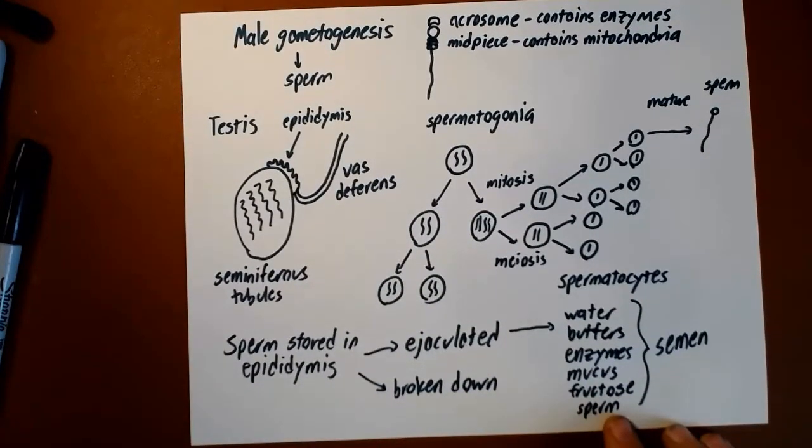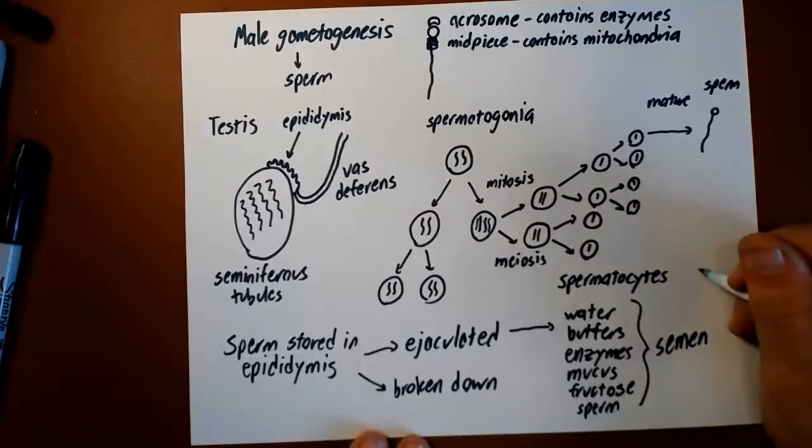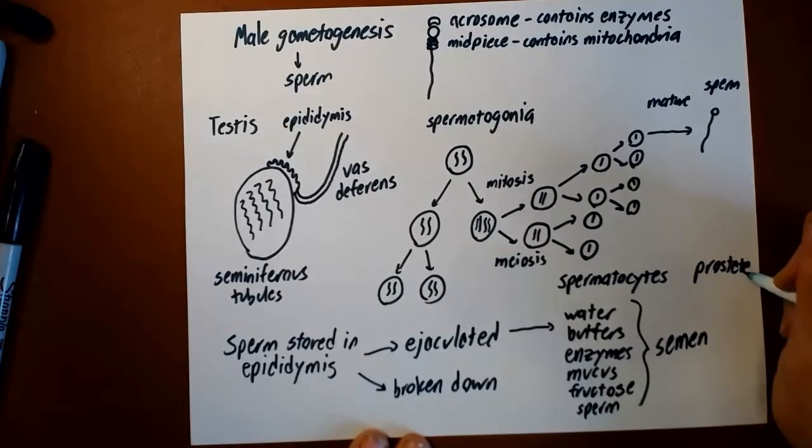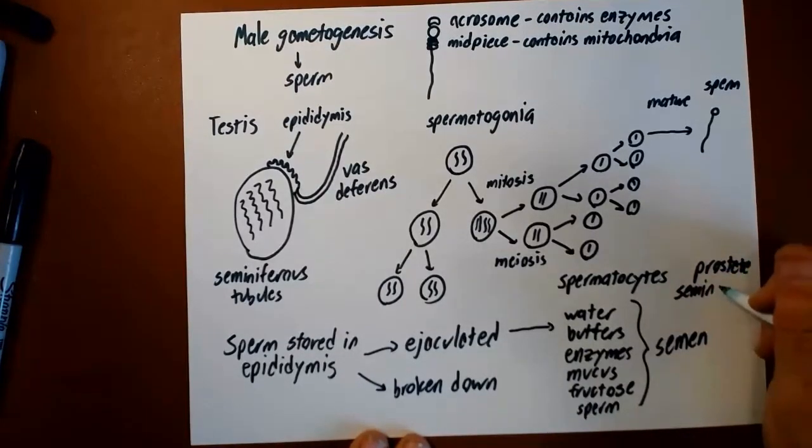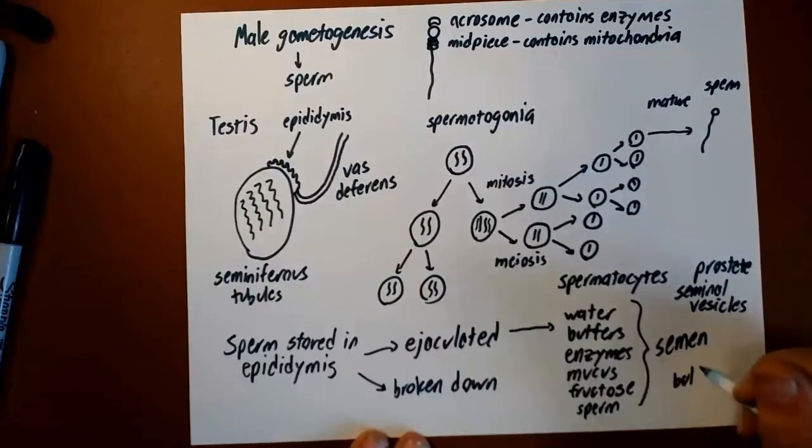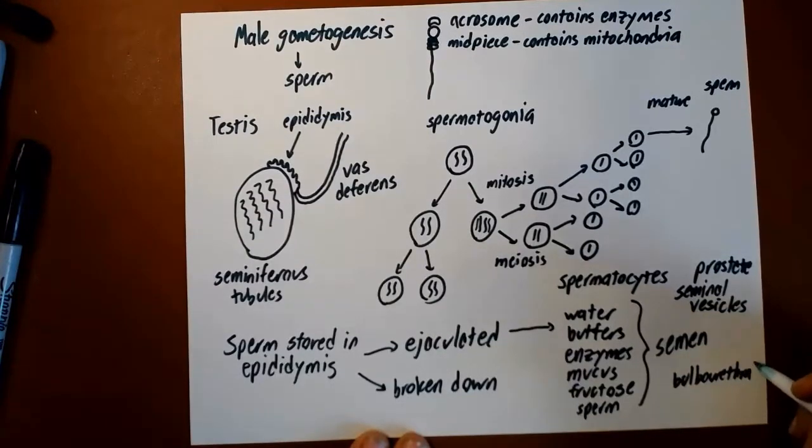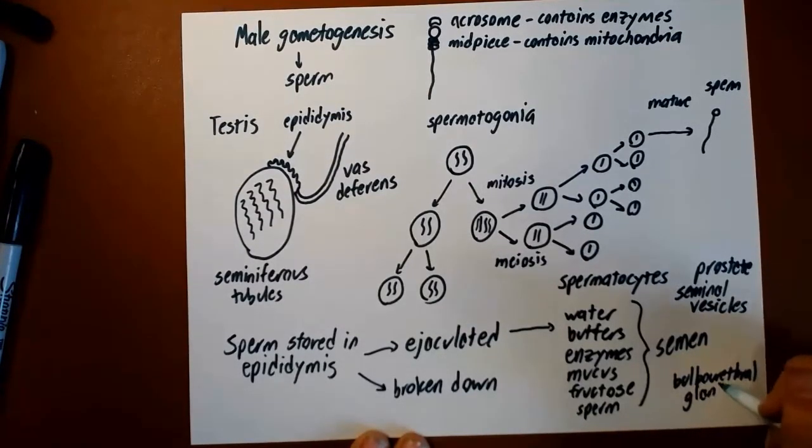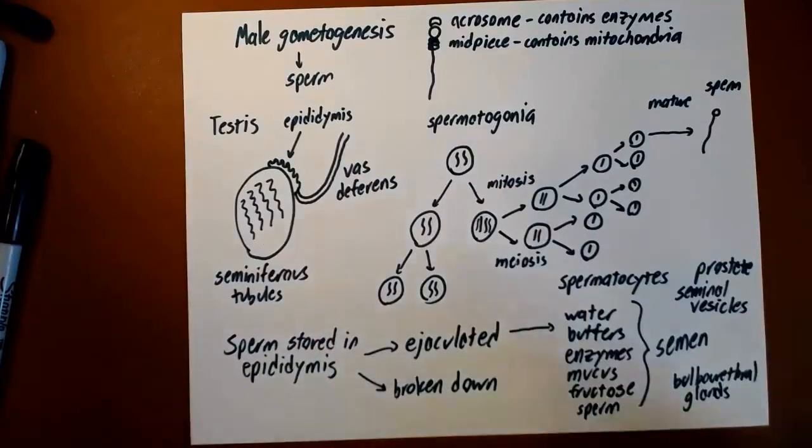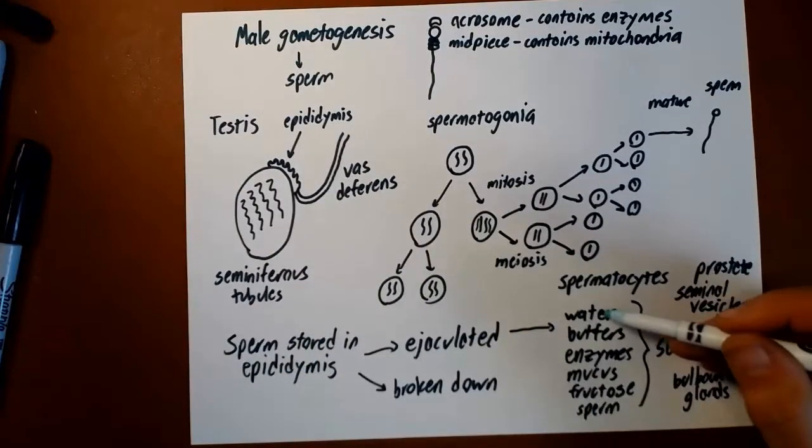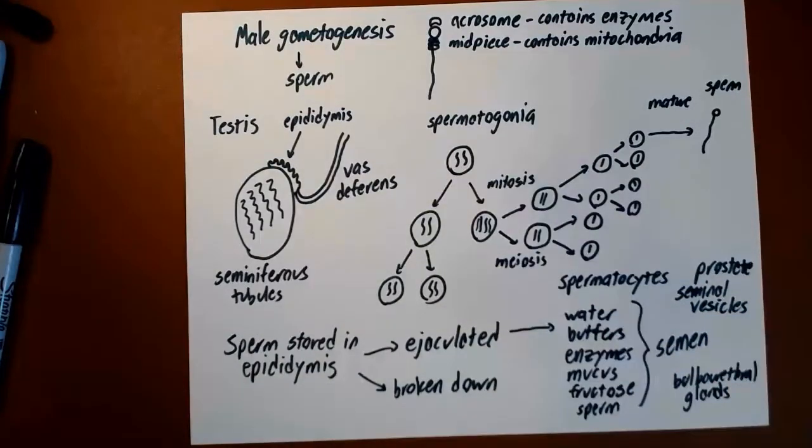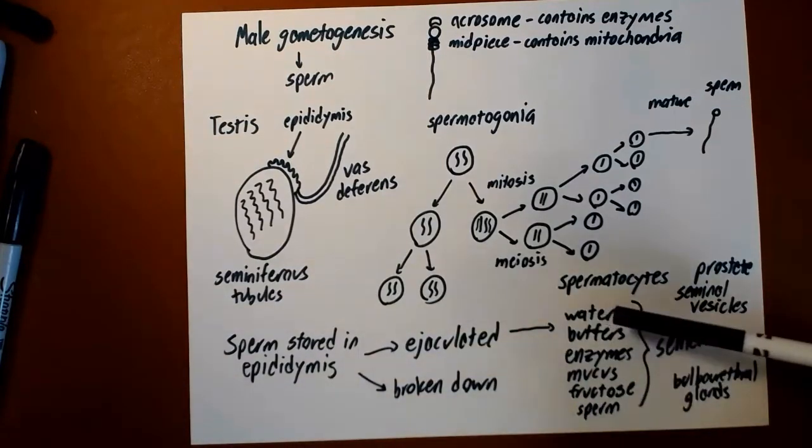The sperm actually only make up a tiny part of that. Most of the rest of this stuff comes from the prostate gland, the seminal vesicles, and the bulbourethral glands. We bring the sperm up the vas deferens and then we add stuff from these three areas, all this other stuff, water, buffers, enzymes, mucus, and fructose to make semen. Semen is about one percent sperm by volume. It's about 99 percent everything else.